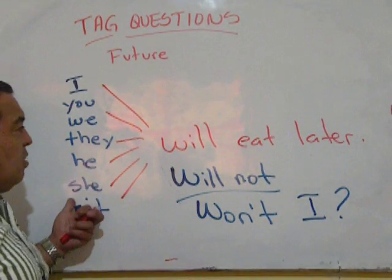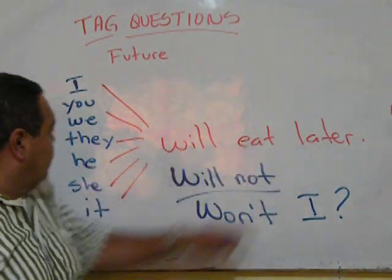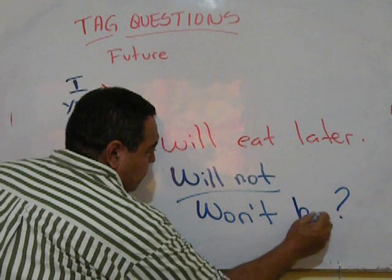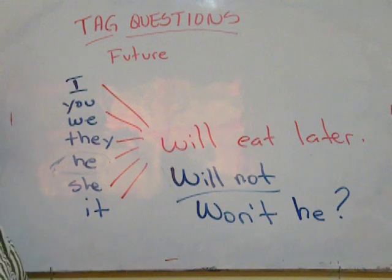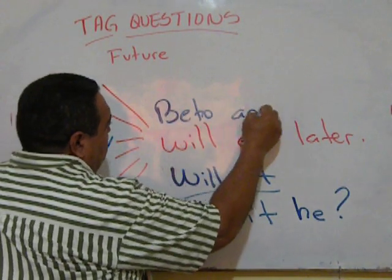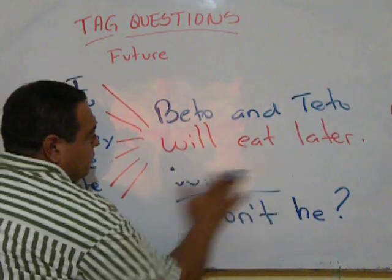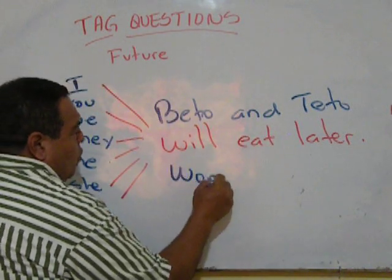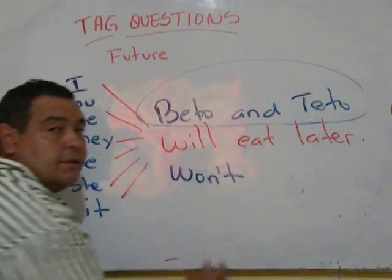It will eat later, won't it? Won't you, won't we, won't they. Now, let's say, Beto and Teto will eat later? Now, that tag question will go, won't they?